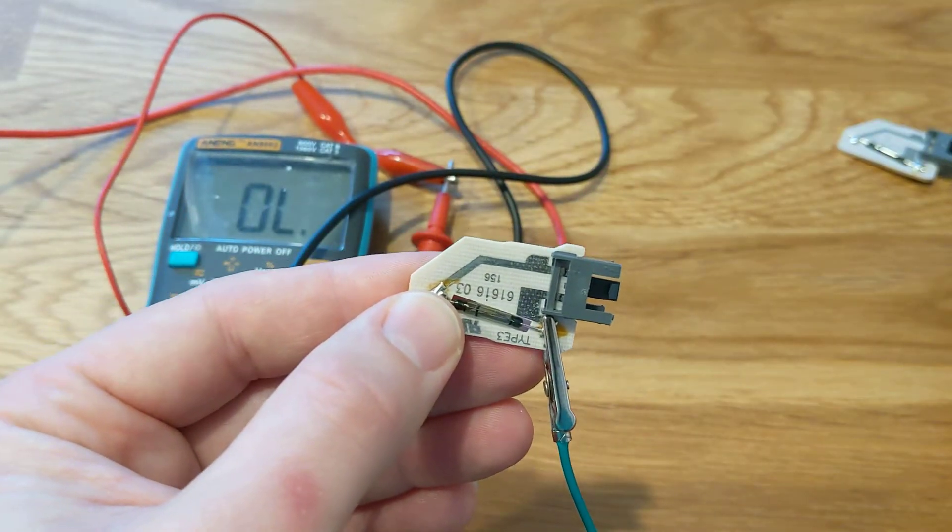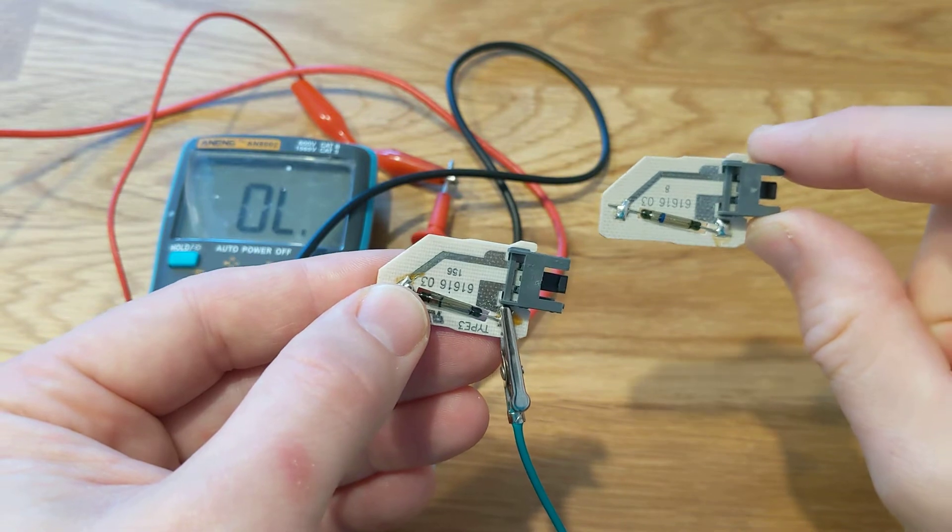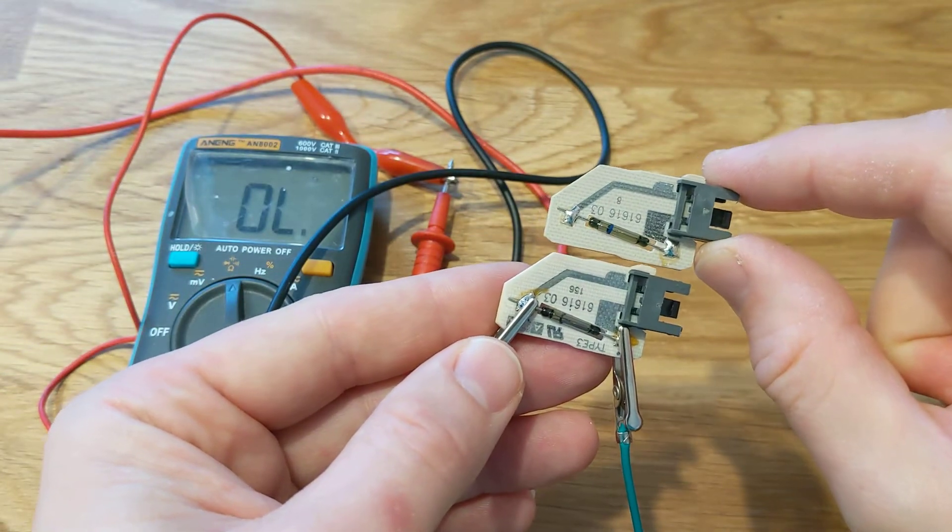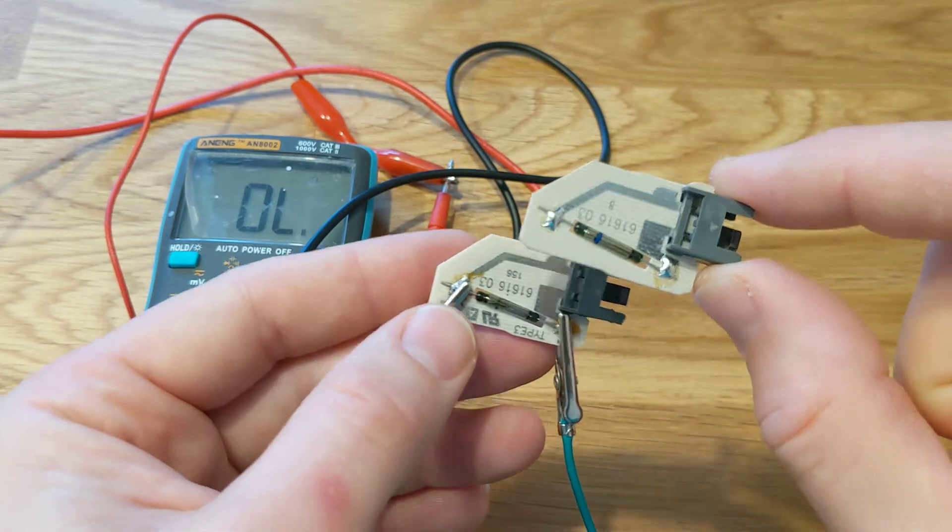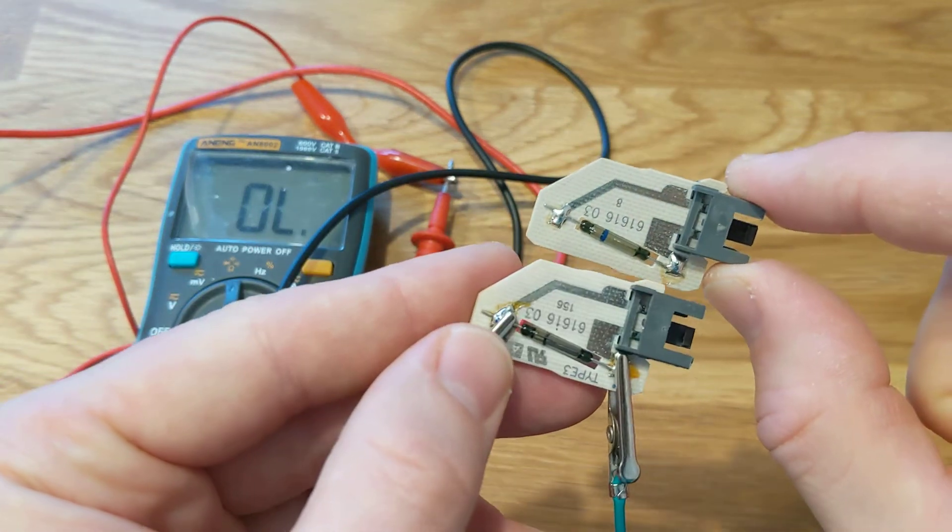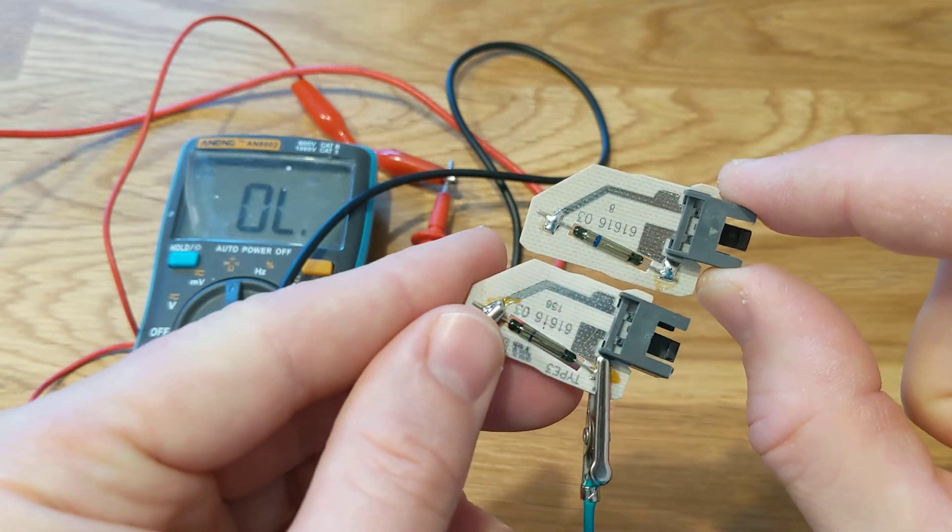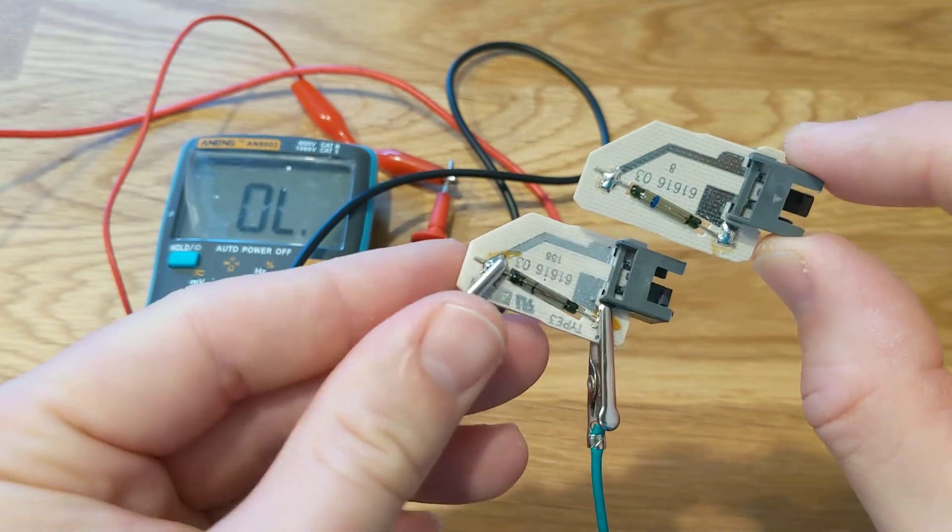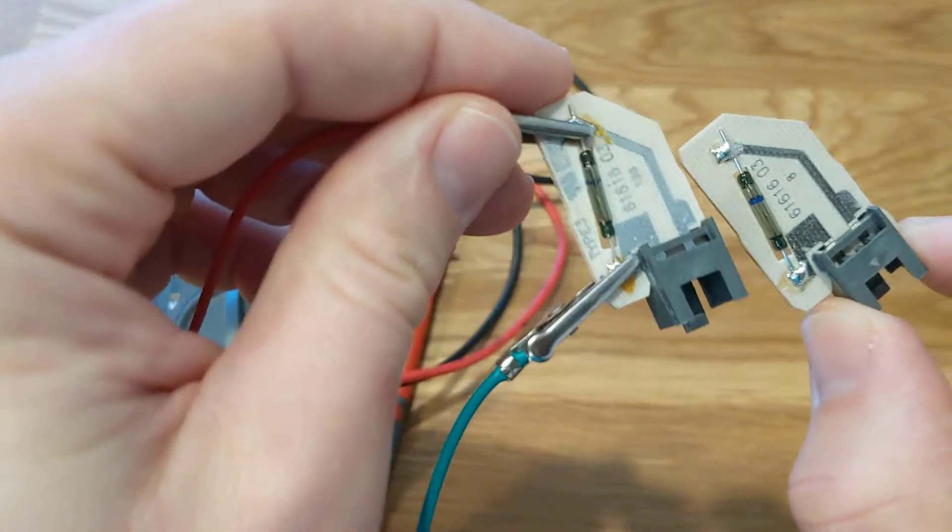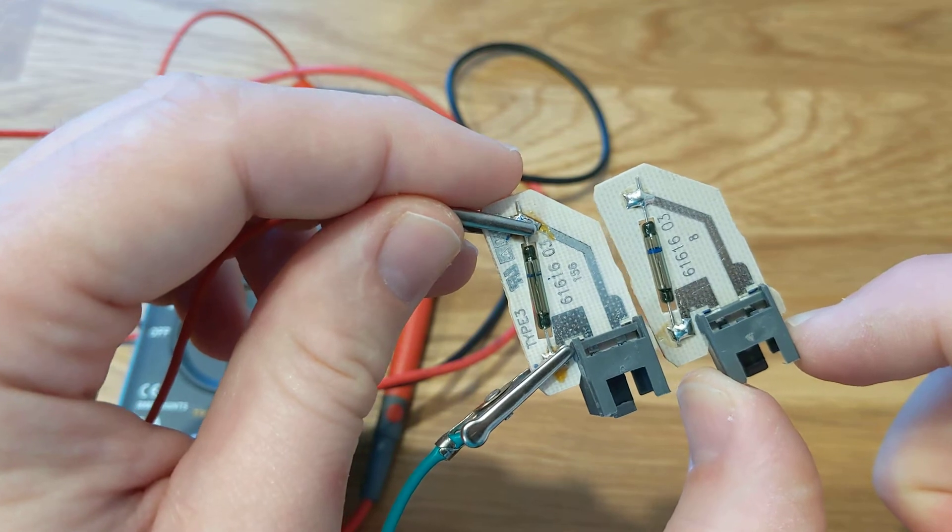Unfortunately, there is no visual way to find if it's faulty. I couldn't find any, but if you do, please let me know in the comments. Basically, on the microscope they look identical.